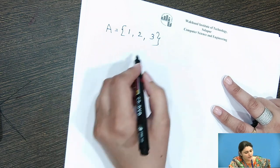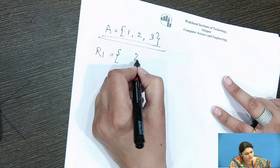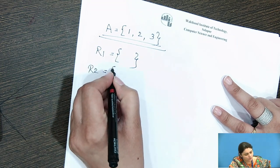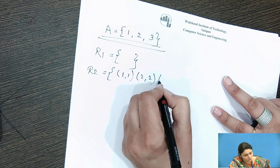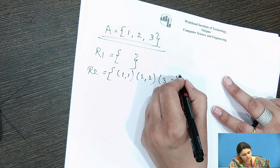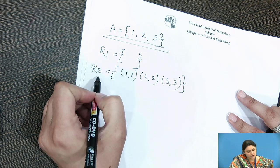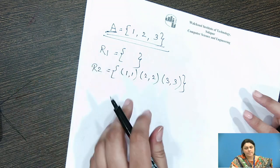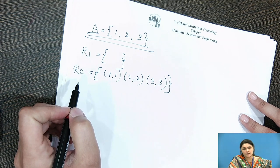I have relation R1 as the empty set, and relation R2 = {(1,1), (2,2), (3,3)}. These are the relations formed by the set A. Let us check whether these relations are POSET or not.